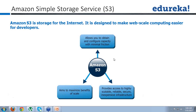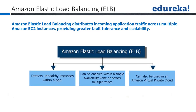This is how you are going to analyze traffic patterns. For the analysis of logs, you are going to store the data in your S3 bucket. Now, there is one more service: Amazon Elastic Load Balancing. It distributes incoming application traffic across multiple Amazon EC2 instances, providing greater fault tolerance and scalability.